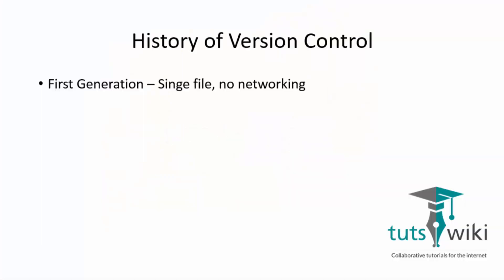Version control is a system that records the changes to a file or a set of files over time so that you can recall specific versions later.